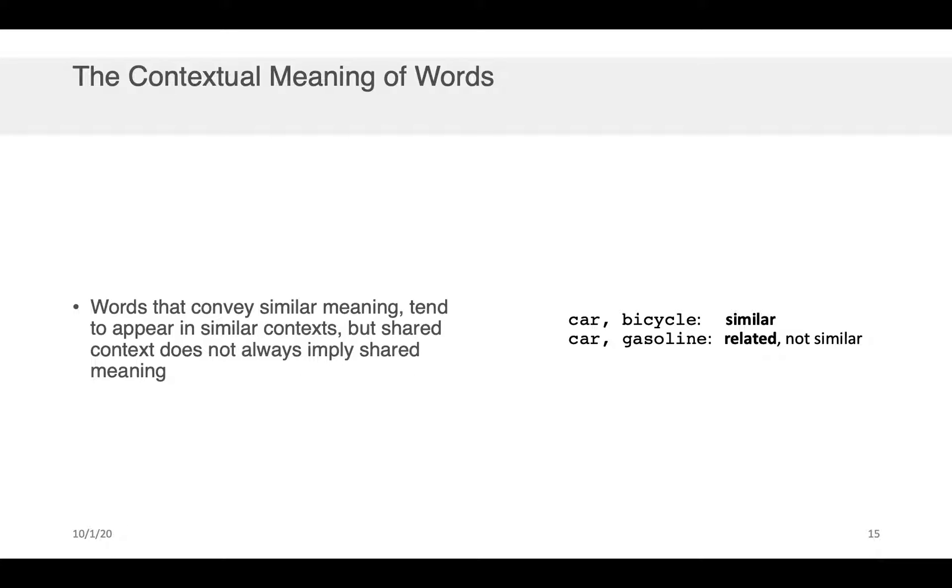Okay, but shared context, of course, does not always imply shared meaning. Gasoline, for example, might exist in a similar context to car, but that's not because gasoline is similar to car, interchangeable in a vehicular sense, but it's because they're related in some kind of a way. So this is an important distinction that just because words may share a similar context does not necessarily imply that the words have similar meaning. It could be that they're related in some sense.